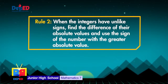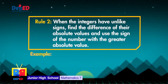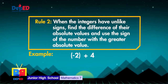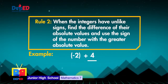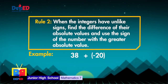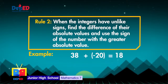Rule number 2: when the integers have unlike signs, find the difference of their absolute values and use the sign of the number with the greater absolute value. For example, negative 2 plus 4 — notice that 2 is negative while 4 is positive; they have unlike signs. So subtract 2 from 4, then copy the sign of 4 since it has the greater absolute value. Therefore, the answer is 2. Let's do more: 38 plus negative 20. Since the signs are unlike, we subtract their absolute values. Since the sign of the number with greater absolute value is positive, the answer will be positive 18.